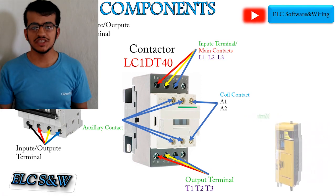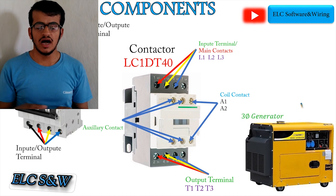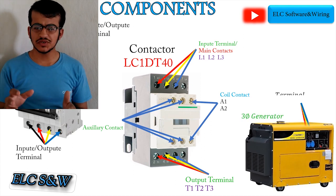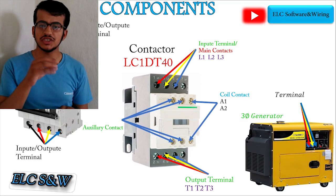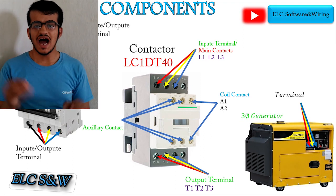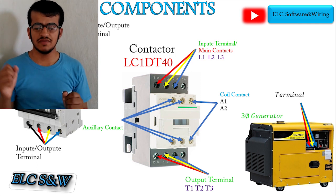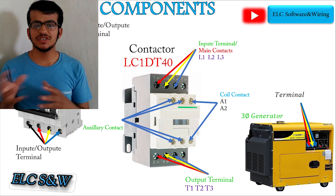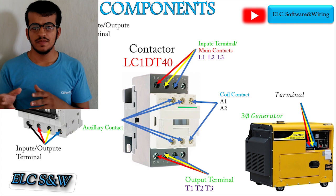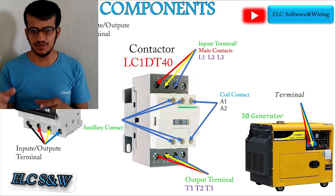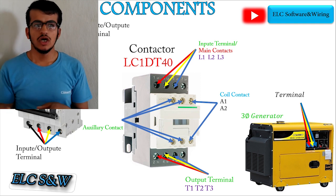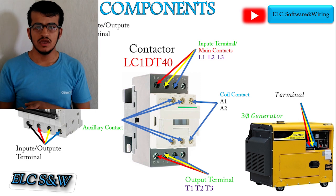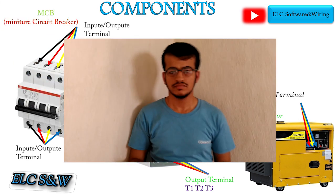3-phase generator. A 3-phase generator is used for electricity generation. A generator is a device that converts mechanical energy into electrical power for use in an external circuit.